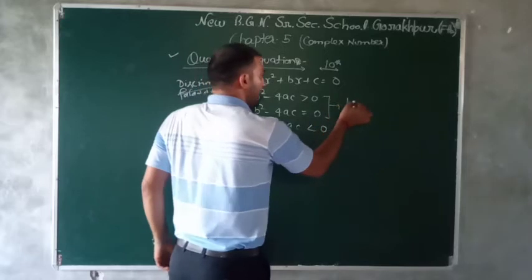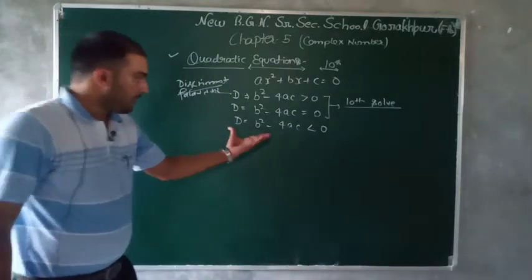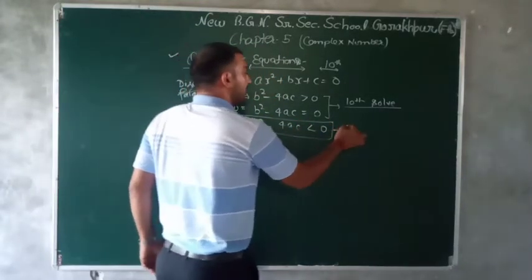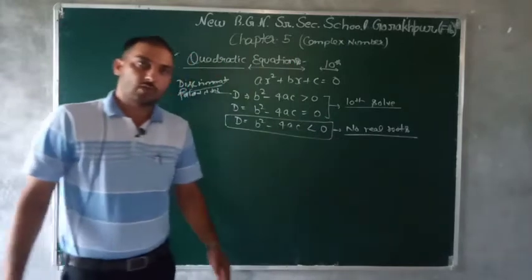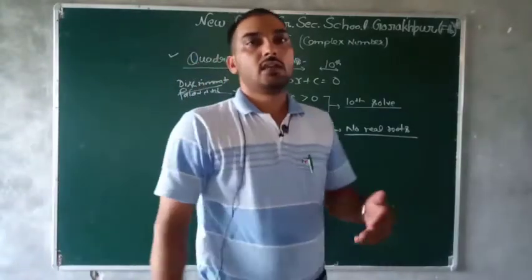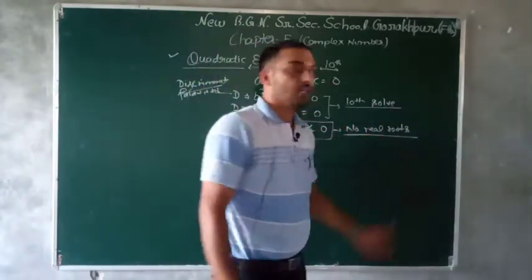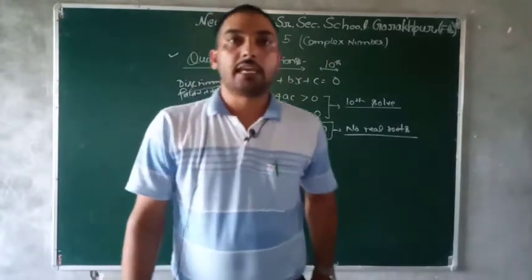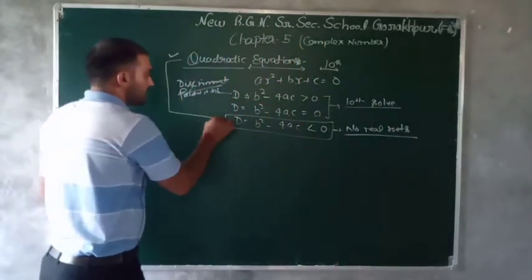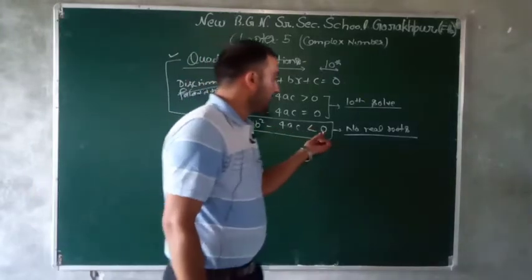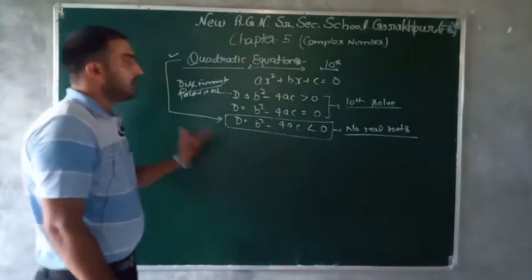जब ये 2 cases थे तो इनको हमने 10th class में solve किया था। और जब कभी b² - 4ac less than 0 होता था तो हम answer लिखते थे 'no real roots' और question को आगे solve नहीं करते थे। अब हम complex number chapter में जब D < 0 होगी, तब उसका solution निकालना सीखेंगे।